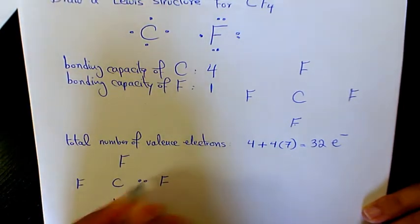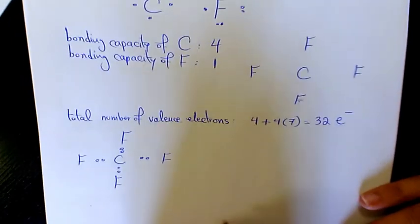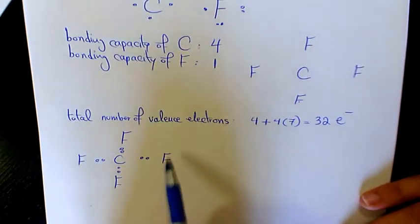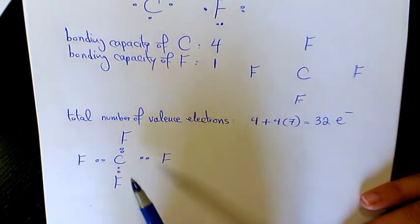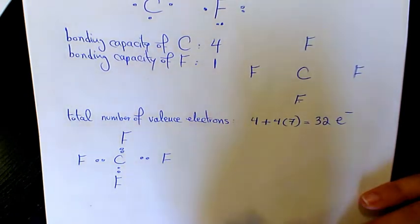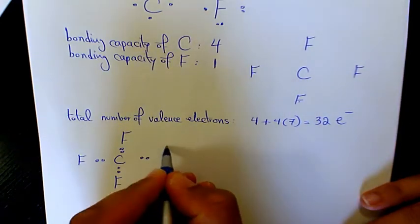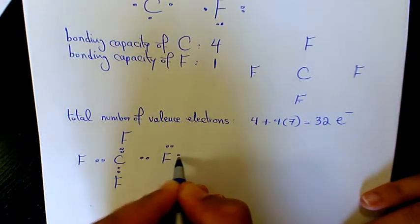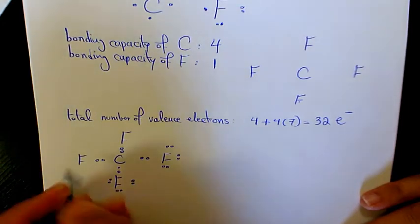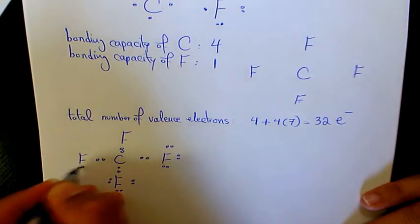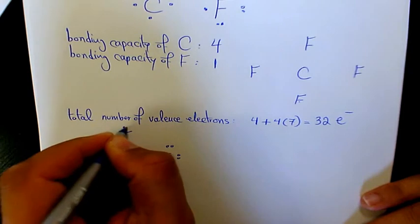We count out the bonding pairs — that accounts for eight electrons used so far. The next step is to place pairs of the remaining valence electrons as lone pairs on the surrounding fluorine atoms. Each fluorine gets three lone pairs to satisfy their electron needs.